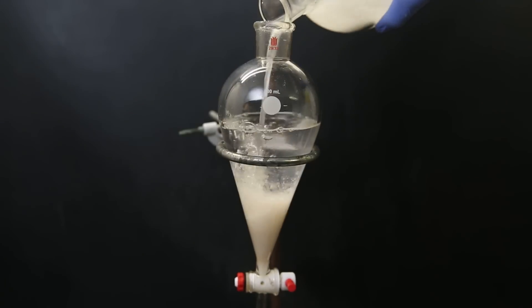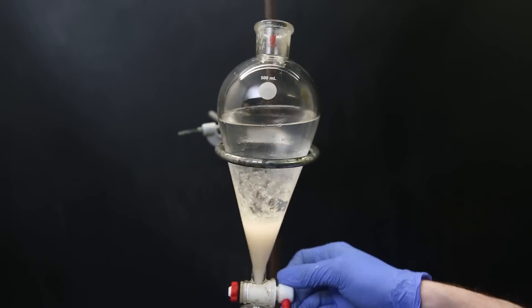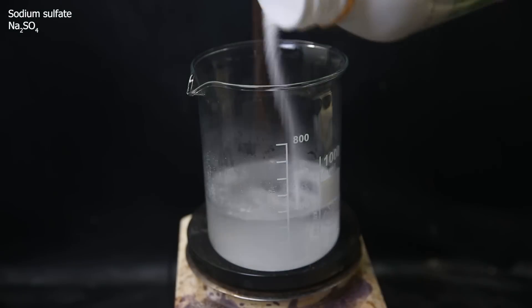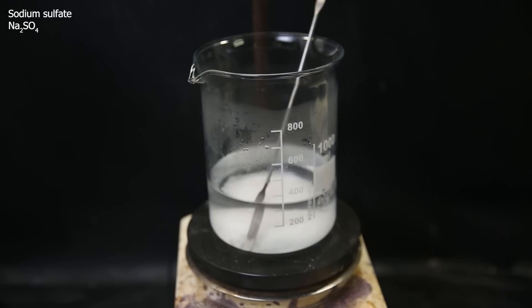I move this mixture to a separatory funnel and drain off most of the water layer and discard it. I collect the 1,3-dioxalane in a beaker, to which I add some sodium sulfate, which will absorb remaining droplets of water.